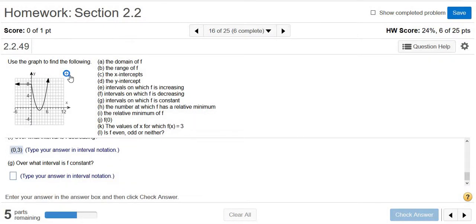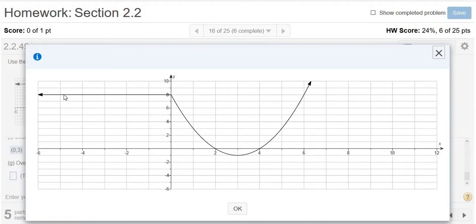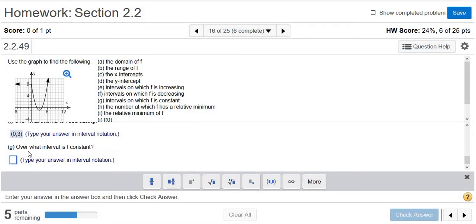On what interval is it constant? Let's go back to our graph. Constant is where it's not changing. So from negative infinity to 0, it's a horizontal line—it's constant. So negative infinity to 0 with parentheses.